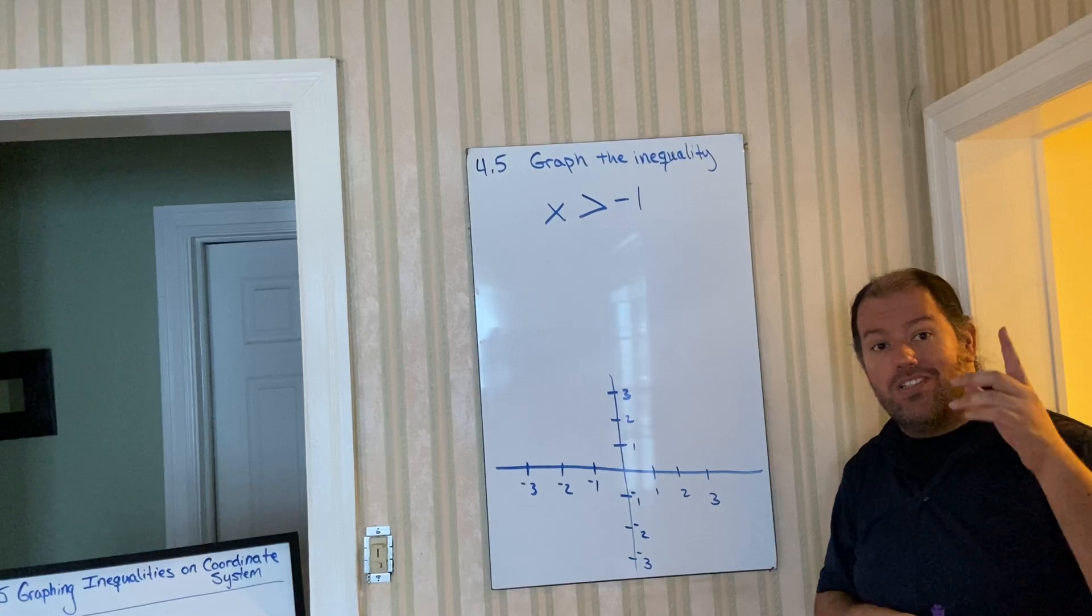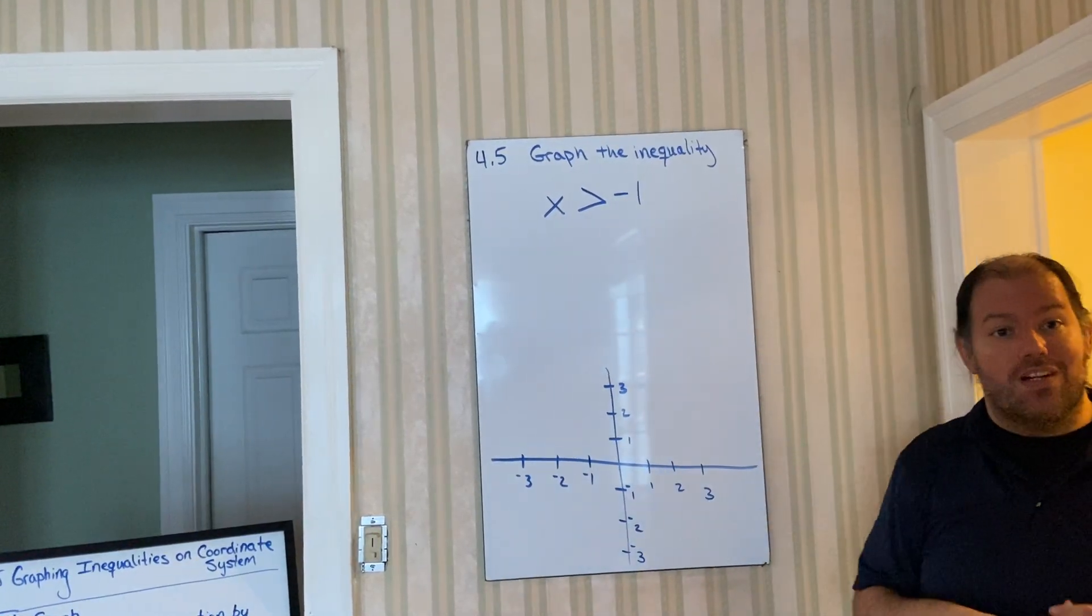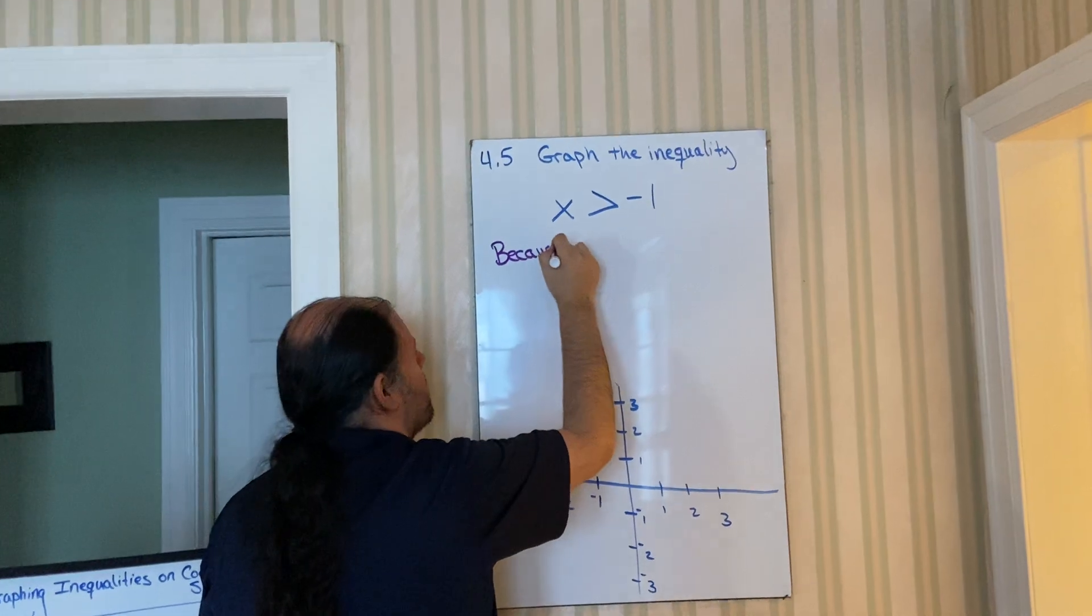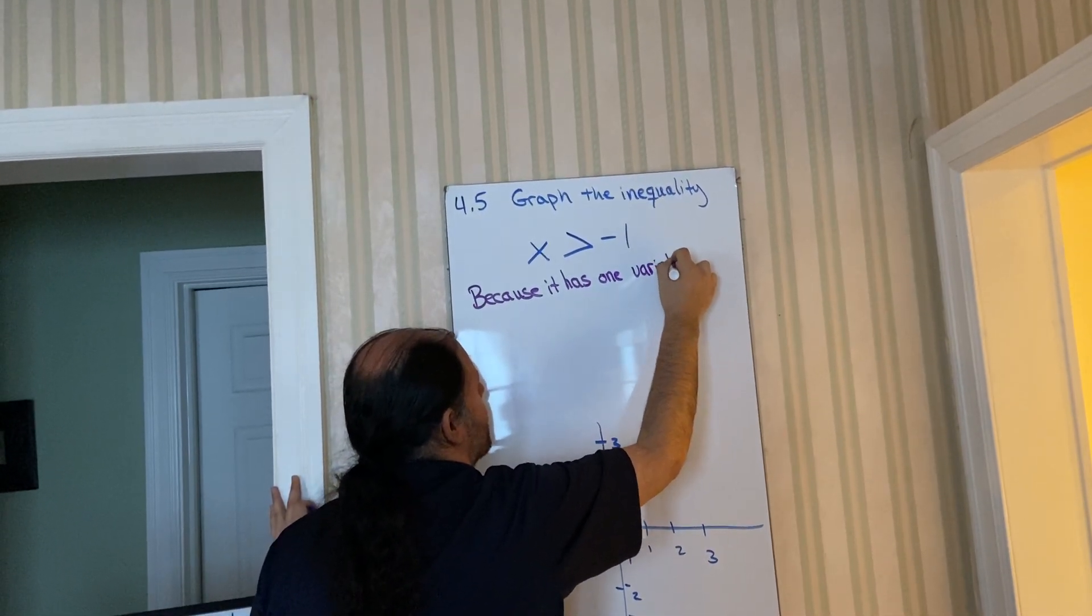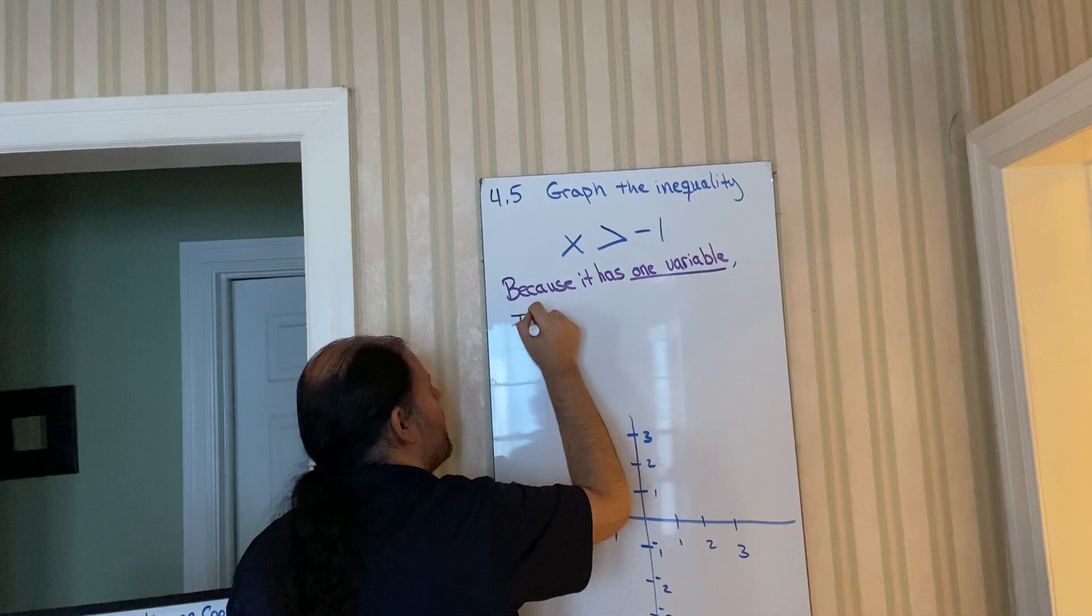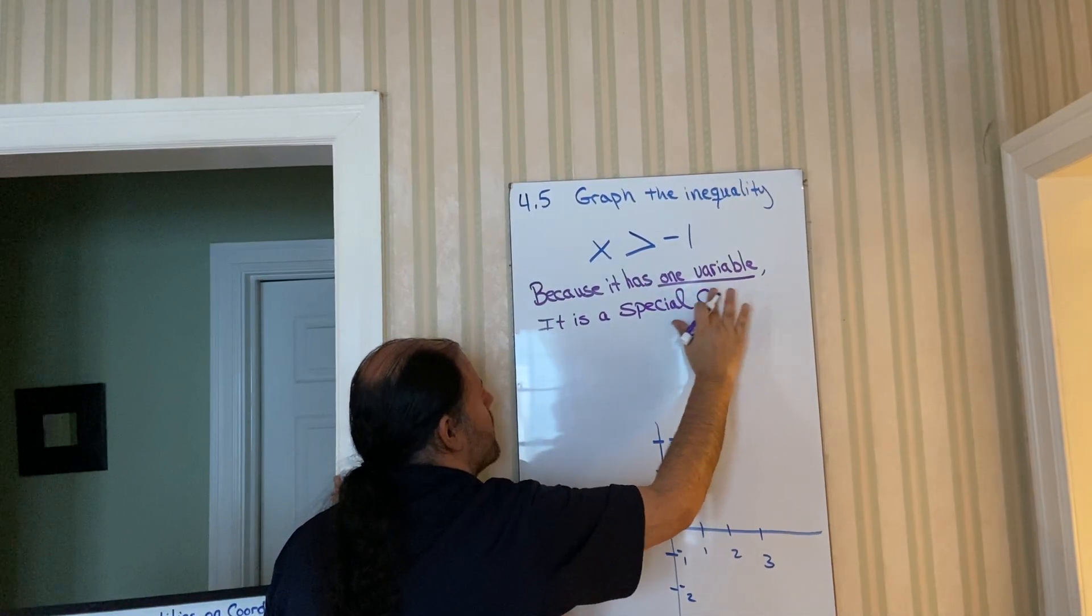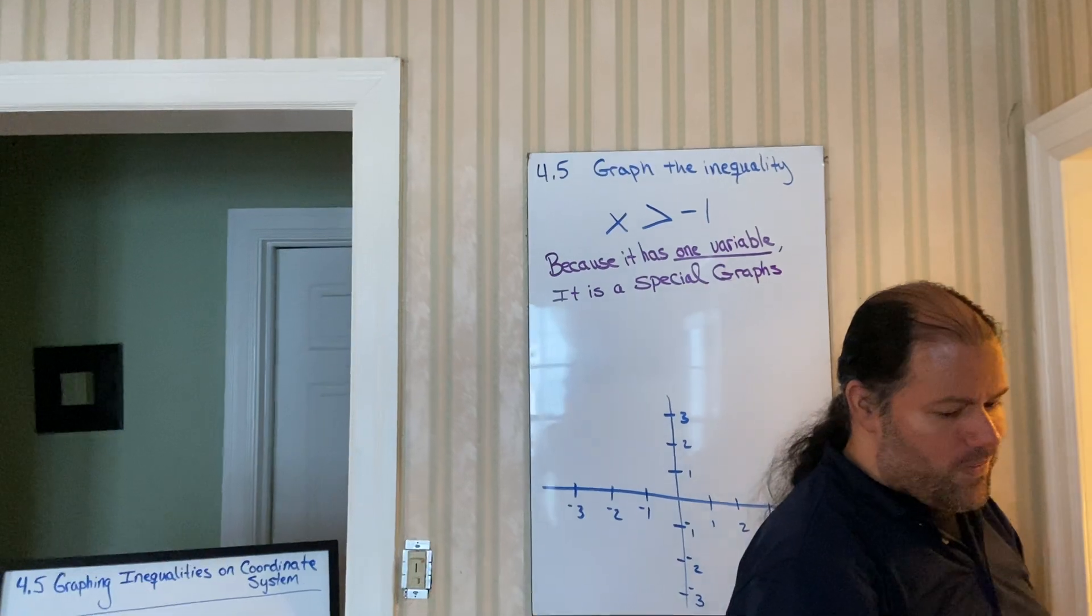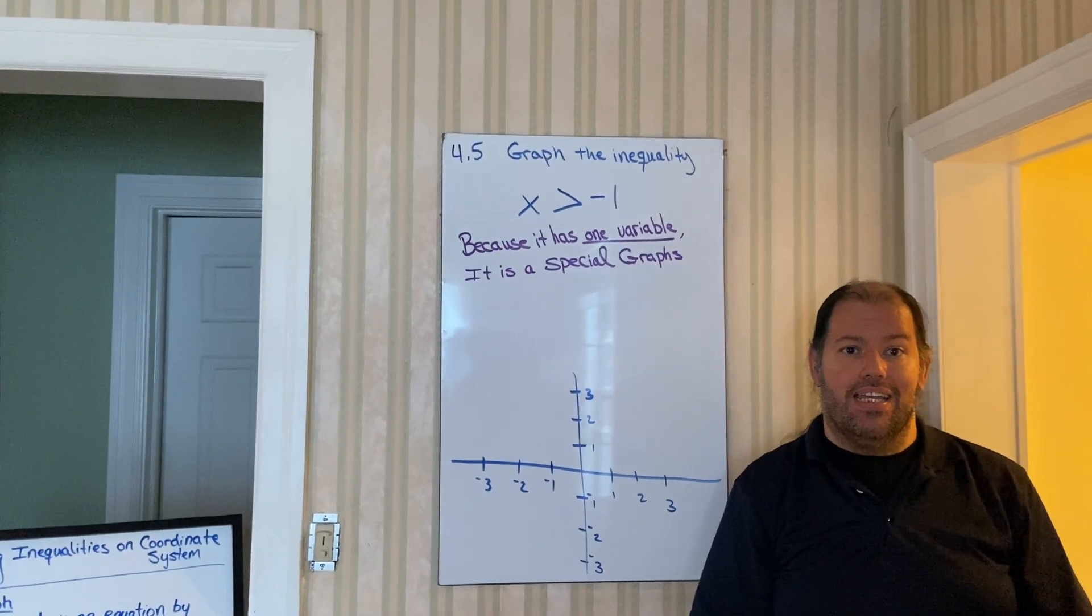Remember how we talked about special equations and we gave you examples when x equals a number or y equals a number? This, because it has one variable, is also a special graph. So special graphs. Remember, most of the equations and inequalities that we were dealing with had two variables. I had an x variable and I had a y variable. Well, this guy only has just one.